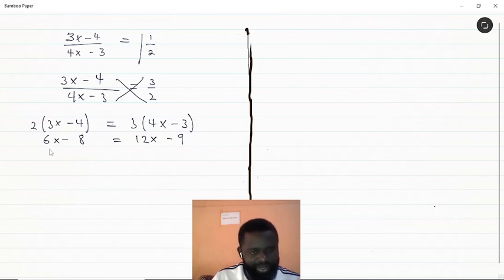We get 6x minus 12x equals minus 9 plus 8. So 6 minus 12 gives us minus 6x, and minus 9 plus 8 gives us minus 1. Now we divide by minus 6.